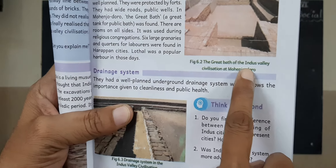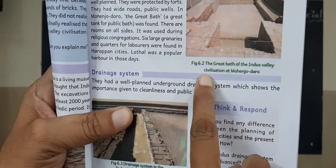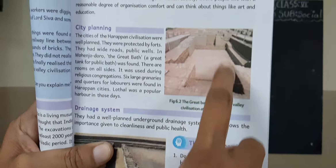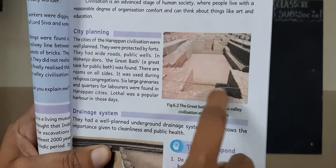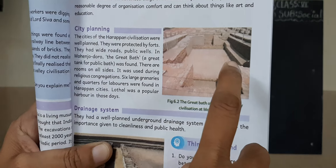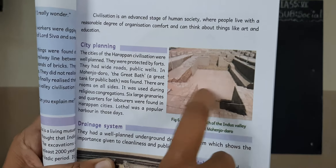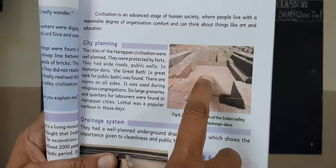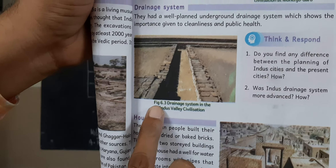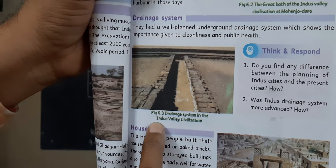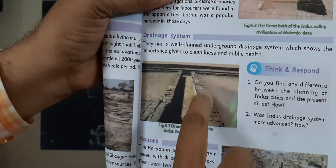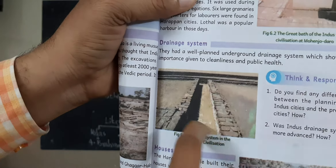The Great Bath of the Indus Valley Civilization at Mohenjo-daro — this is the Mohenjo-daro Great Bath. Look at how they constructed it. Now this is the drainage system in the Indus Valley Civilization. Look how they constructed it neatly.